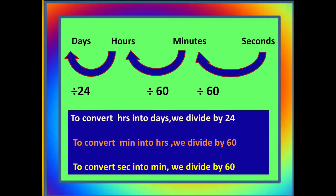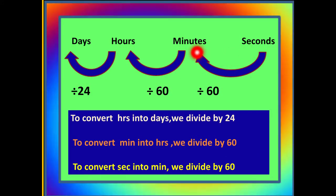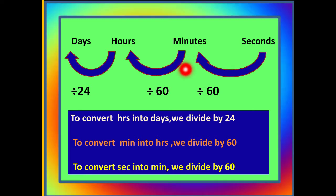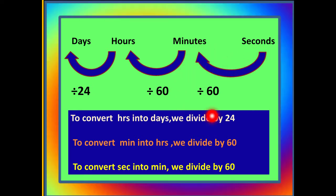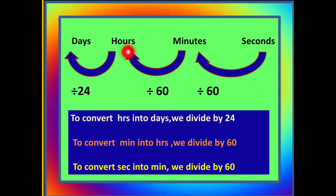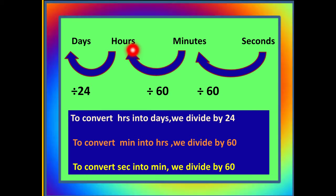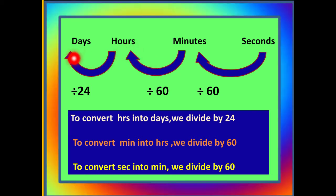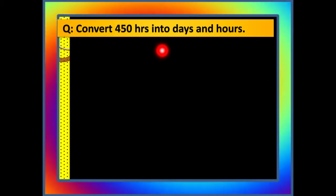Now if we have to convert any smaller unit into the bigger one, then we always divide. To convert seconds into minutes we divide by 60, to convert minutes to hours we divide by 60, and to convert hours into days we will divide by 24.